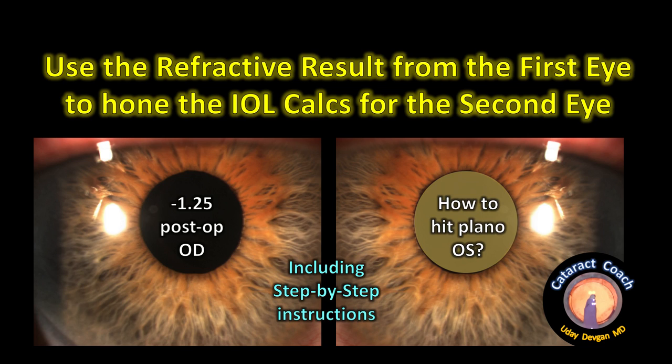CataractCoach.com. How do you use the refractive result from the first eye to help hone the IOL calculations for the second eye? So in the case shown here, the patient is minus 1.25 equivalent post-op for the right eye, but now for the left eye, we really want to hit plano for best distance vision.